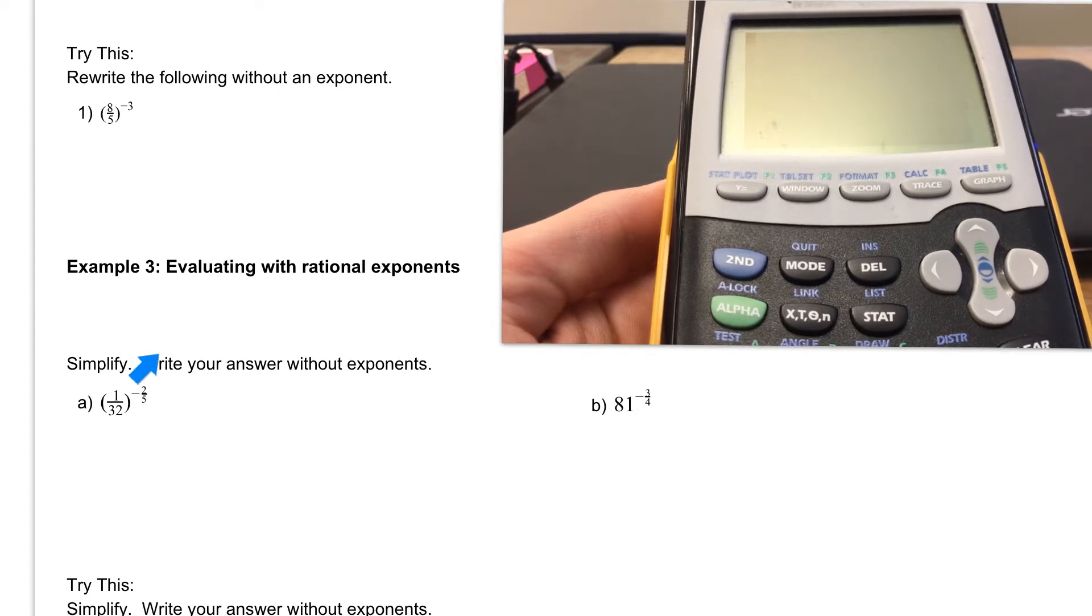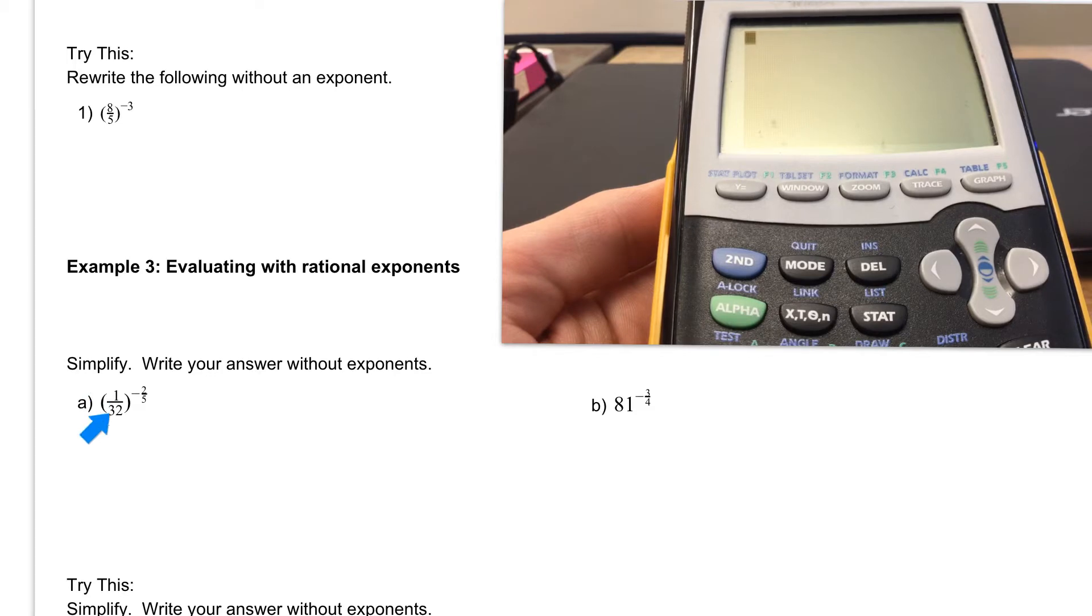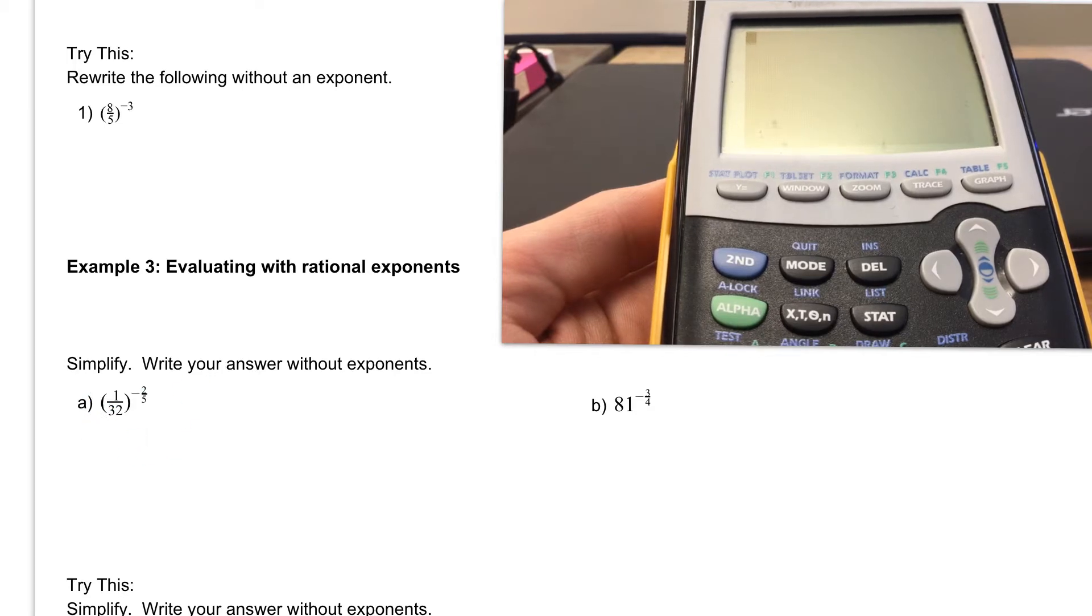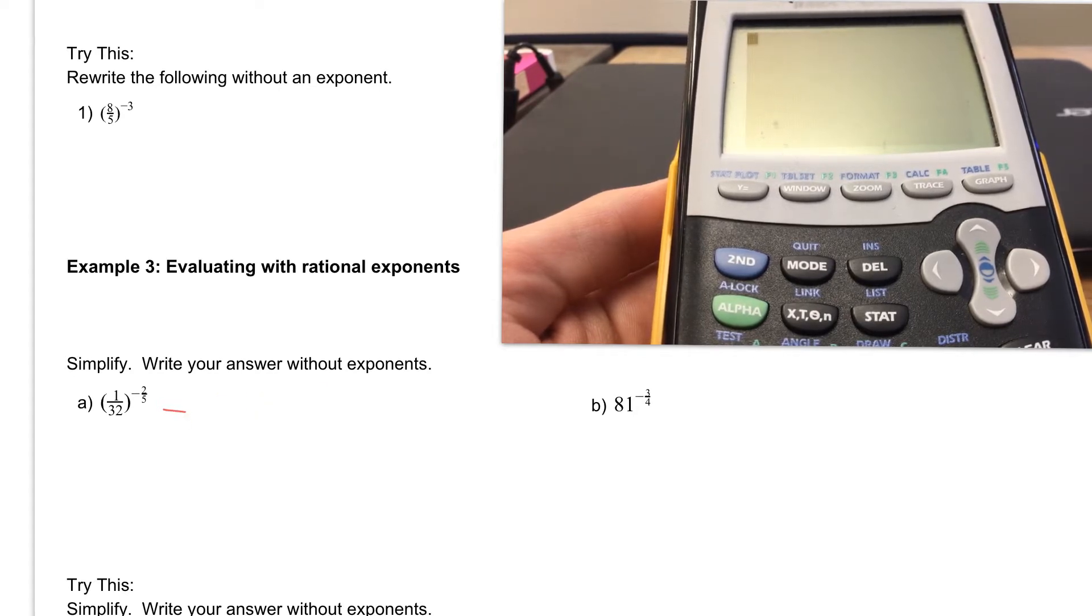But the first thing we're going to take care of each time are these negative exponents, using that rules of negatives that we just looked at. Remember, if we have a negative exponent, we want to get things positive. So if we have 1 over 32, to make this positive, we need to bring that 32 up to the top. So we're going to look at this as 32 raised to the positive 2 over 5.